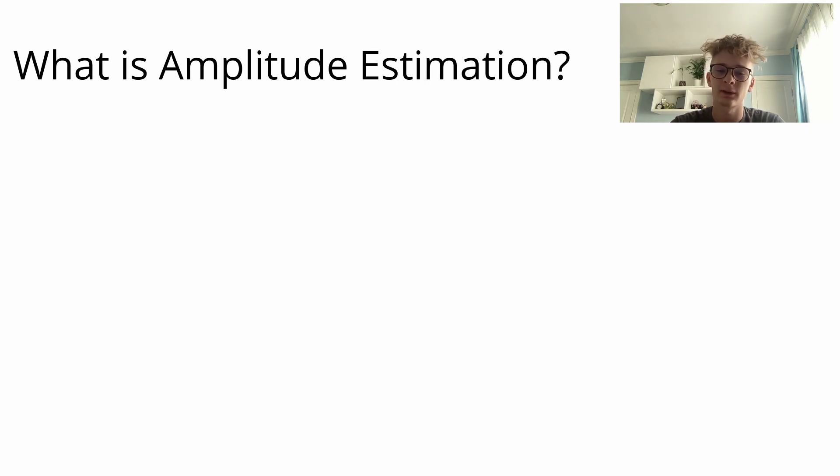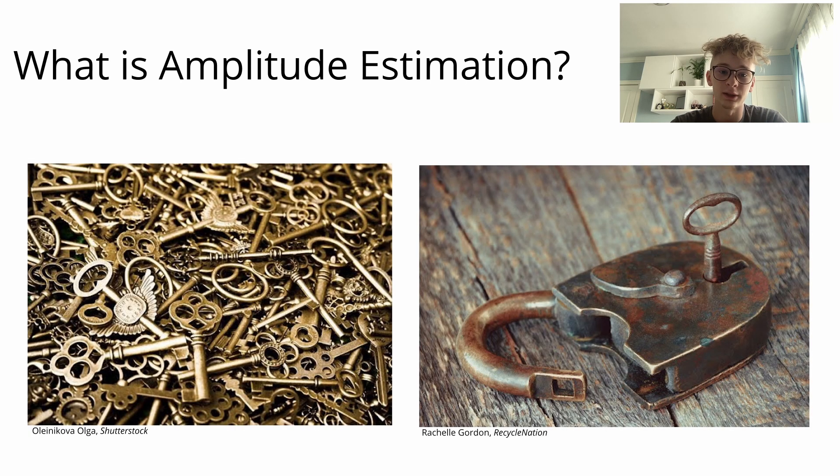To explain the concept of this algorithm clearly, imagine you have a lock and a box of keys, some of which open the lock. Quantum amplitude estimation tells us how likely we are to pick a good key out of the box. Since qubits can represent multiple states simultaneously, it's as if all the keys from the box are put into the lock at the same time. Classical computers must sample every key one at a time.